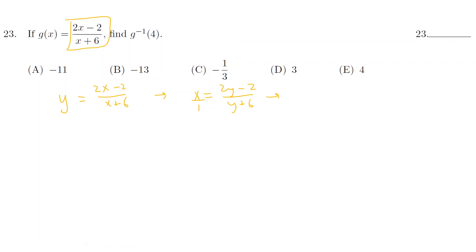So x times y plus 6 equals 2y minus 2. xy plus 6x equal 2y minus 2. So I'll move y's to one side. So xy minus 2y equals minus 6x minus 2. So y times x minus 2 equal minus 6x minus 2. And therefore y equals negative 6x minus 2 over x minus 2. That's my new y. And all I have to do is plug in 4. So if I plug in 4, I get negative 6 times 4 minus 2 over 4 minus 2, which is negative 24 minus 2 over 2, which is negative 26 over 2, which is negative 13.